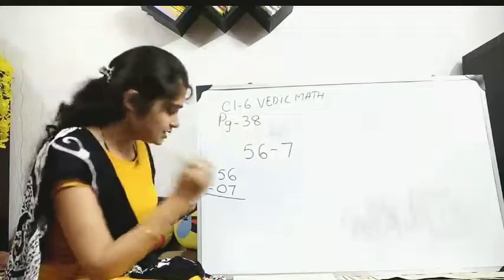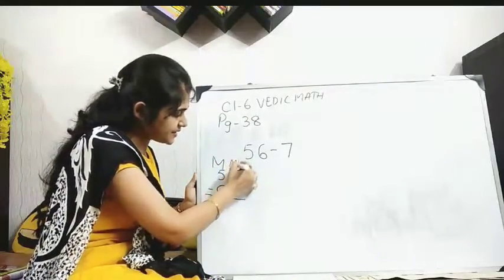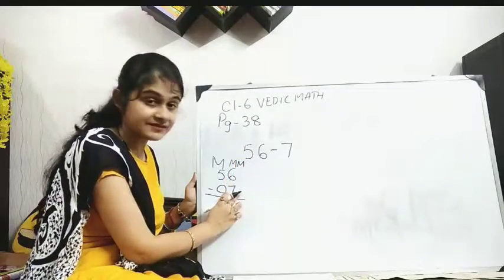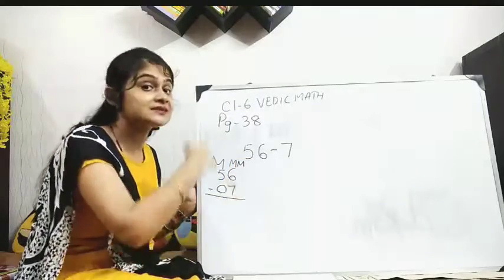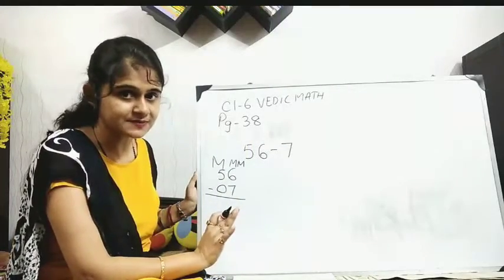Mismatch. So this is match. This is mismatch. Because this is 6, this is 7. That means my lower number is greater than the upper number. Done till this much.